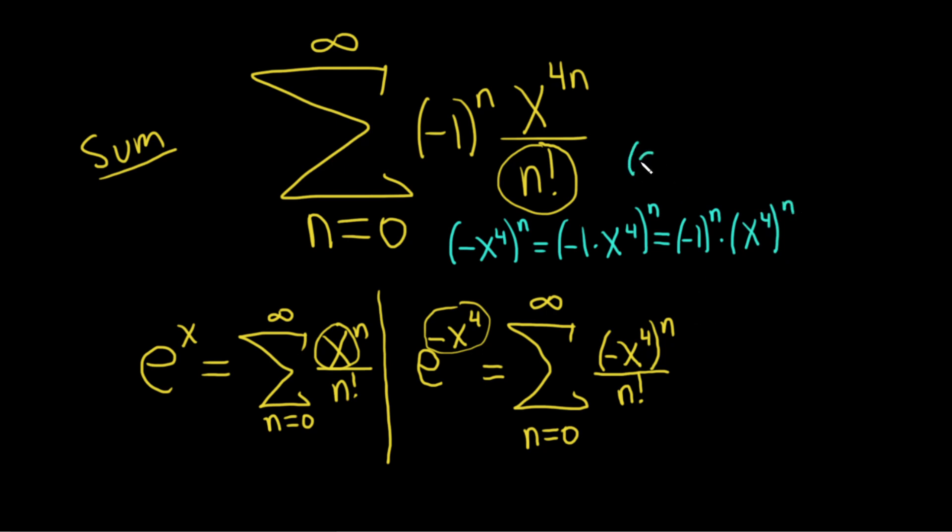That's a property that says if you have a times b to the n, that's the same thing as a to the n times b to the n. So this is negative 1 to the n. And then here you multiply the 4 and the n. That's another property of exponents. And so we're good.